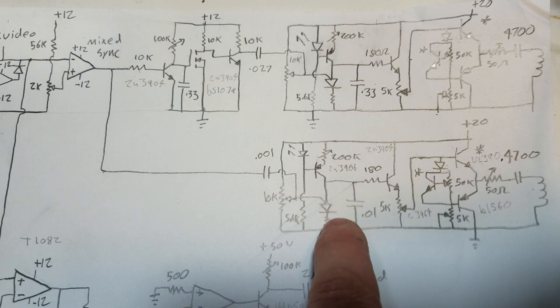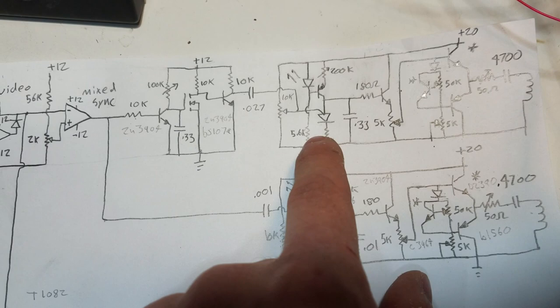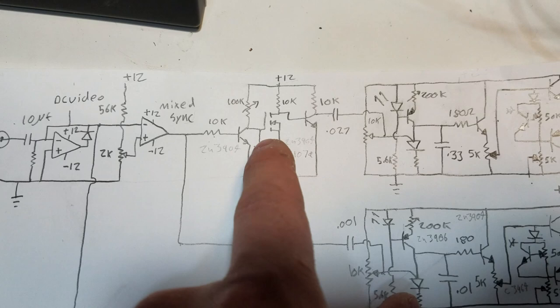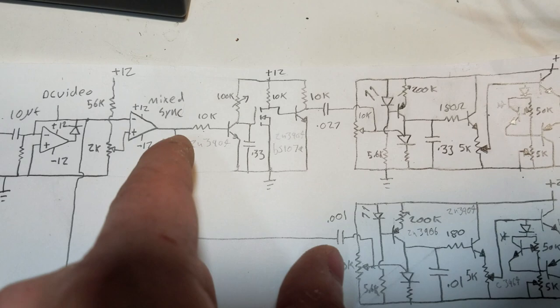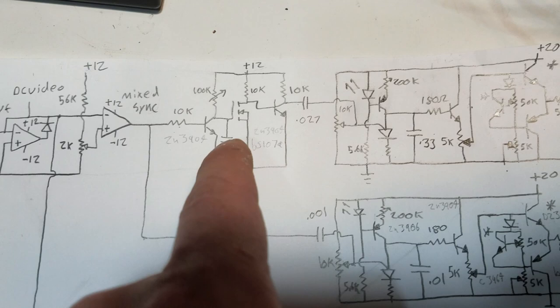The way that this works is by very slowly charging this capacitor, and whenever we get a line pulse right here, it discharges this capacitor. But what happens is that when we miss a line pulse, this capacitor has enough time to charge up to the point at which this MOSFET right here will turn on. This will charge up to the point where it will reach the gate threshold of this FET, and it will turn on.